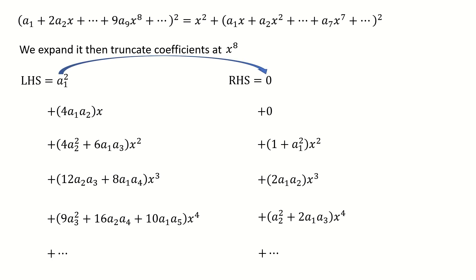So first, let's compare the constant term. So we got a1 equal to 0. If a1 is 0, then for left hand side, those terms vanish. And for right hand side, we got these terms vanish.